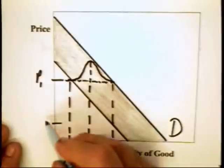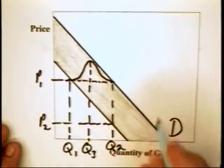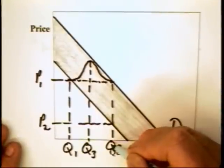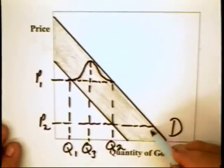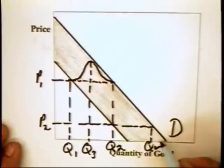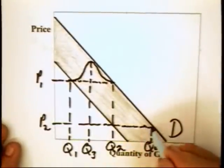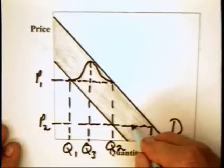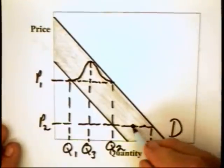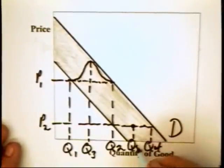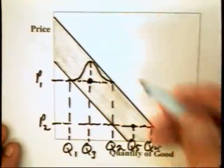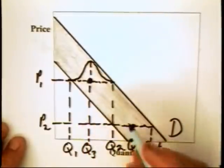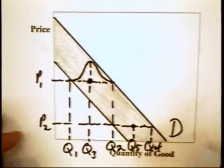Now, suppose that the price goes to P2. If it does, then consumers can be expected to buy as little as Q2, but as much as Q4. And all throughout. Well, how much are they going to buy on average? Well, they will tend to buy, on average, the middle of the distribution, or Q5. So we move from a point equal to, at a price of P1, Q3, to a point P2, Q5.